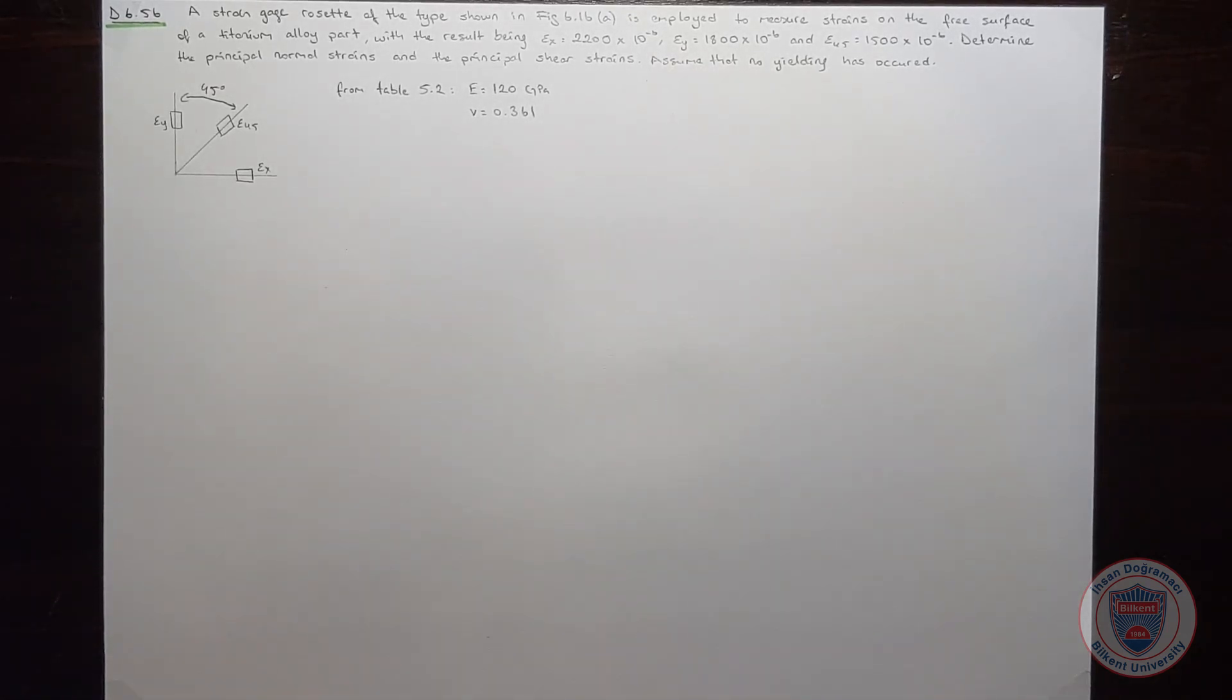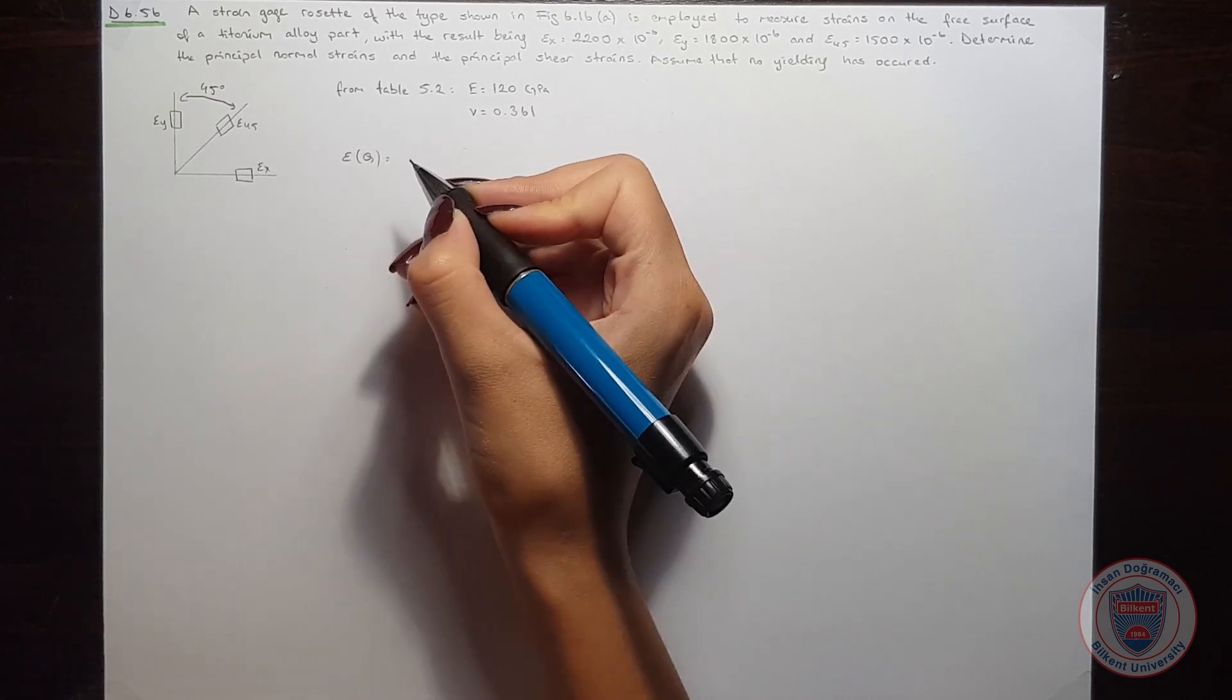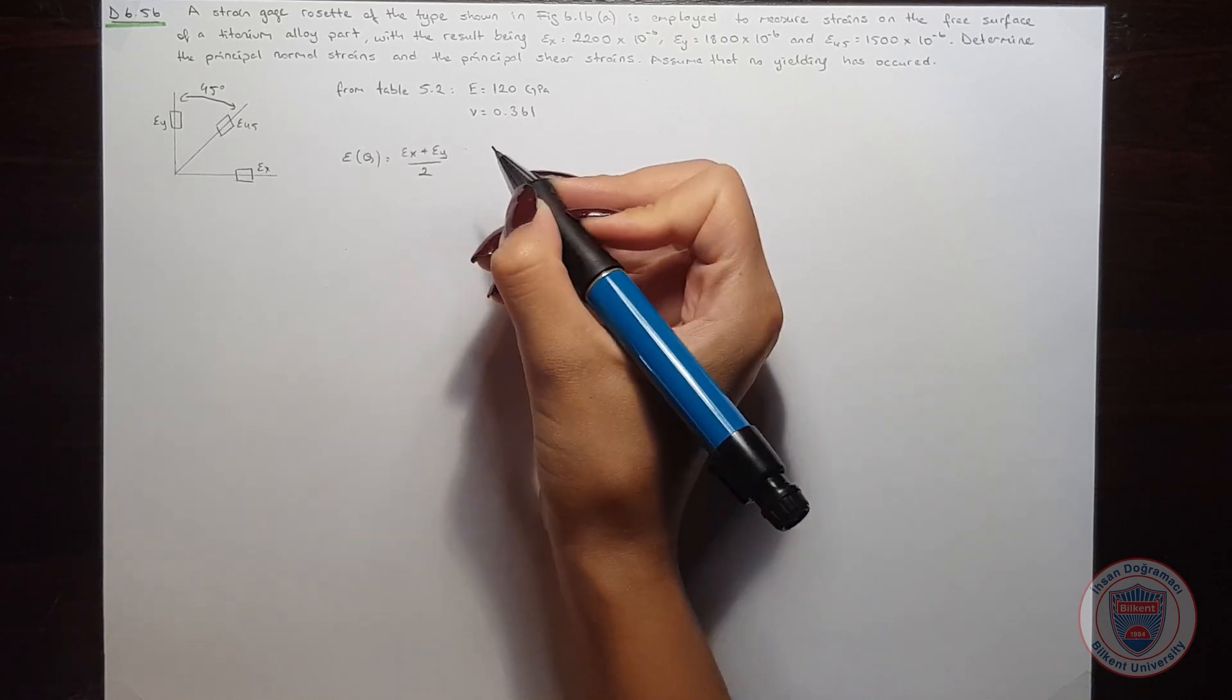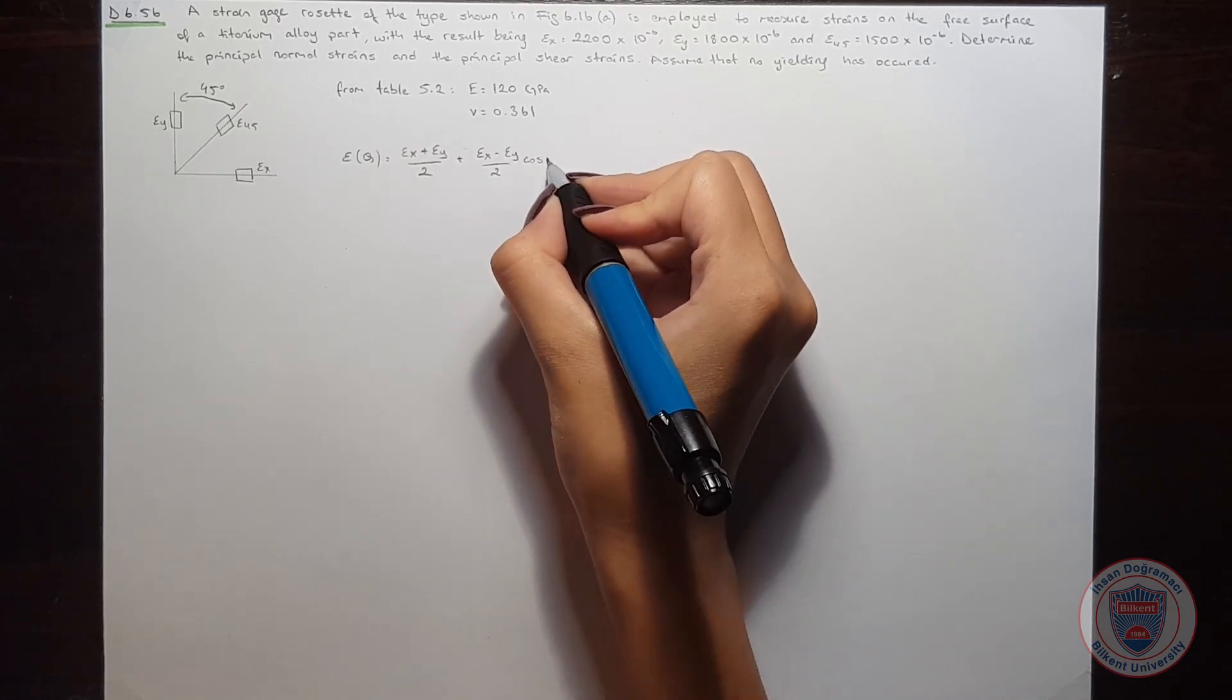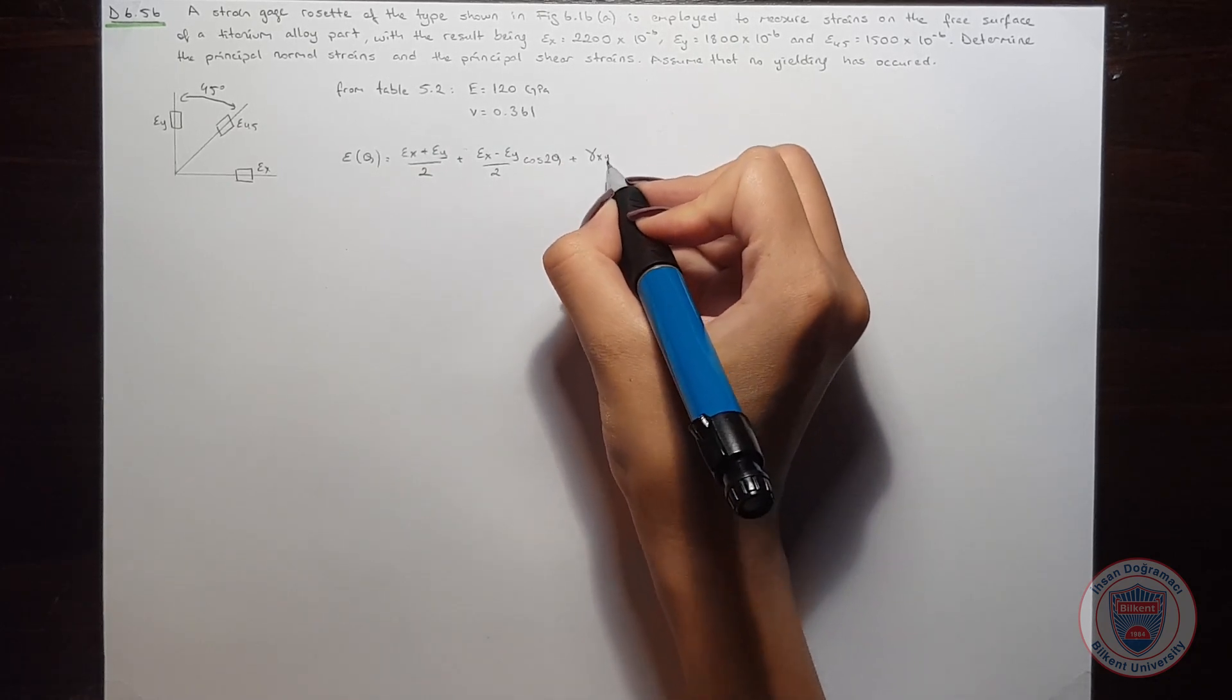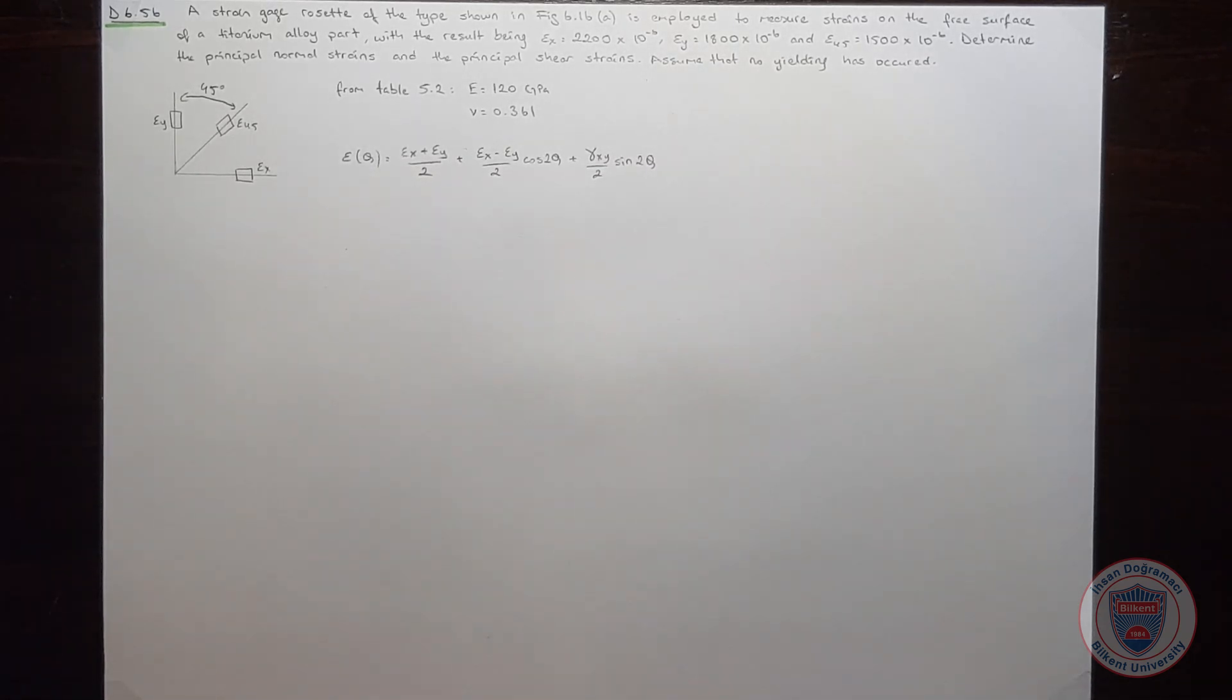We have an equation which shows epsilon at a degree theta will be equal to... Let's see what happens when theta is equal to 45 degrees.